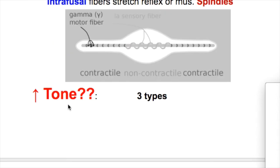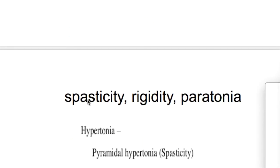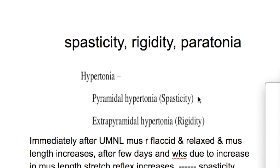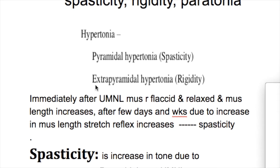There are three types of hypertonia or increased muscle tone: spasticity, rigidity, and paratonia. Spasticity occurs due to a lesion of the pyramidal tract, or pyramidal hypertonia, whereas rigidity is due to disorders of the extrapyramidal tract.